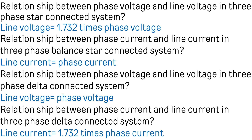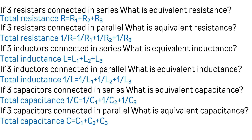What is the relationship between phase current and line current in a three-phase delta connected system? Line current is equal to root three times, or 1.732 times, phase current. If three resistors are connected in series, what is the equivalent resistance? R equals R1 plus R2 plus R3. If three resistors are connected in parallel, what is the equivalent resistance? 1/R equals 1/R1 plus 1/R2 plus 1/R3. If three inductors are connected in series, equivalent inductance L equals L1 plus L2 plus L3. If three inductors are connected in parallel, 1/L equals 1/L1 plus 1/L2 plus 1/L3. If three capacitors are connected in series, equivalent capacitance: 1/C equals 1/C1 plus 1/C2 plus 1/C3.